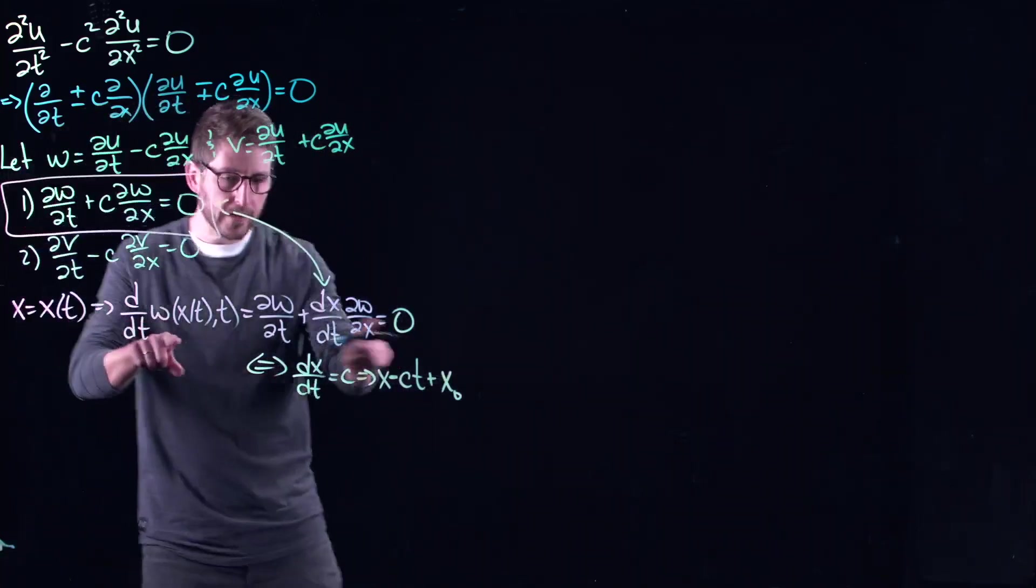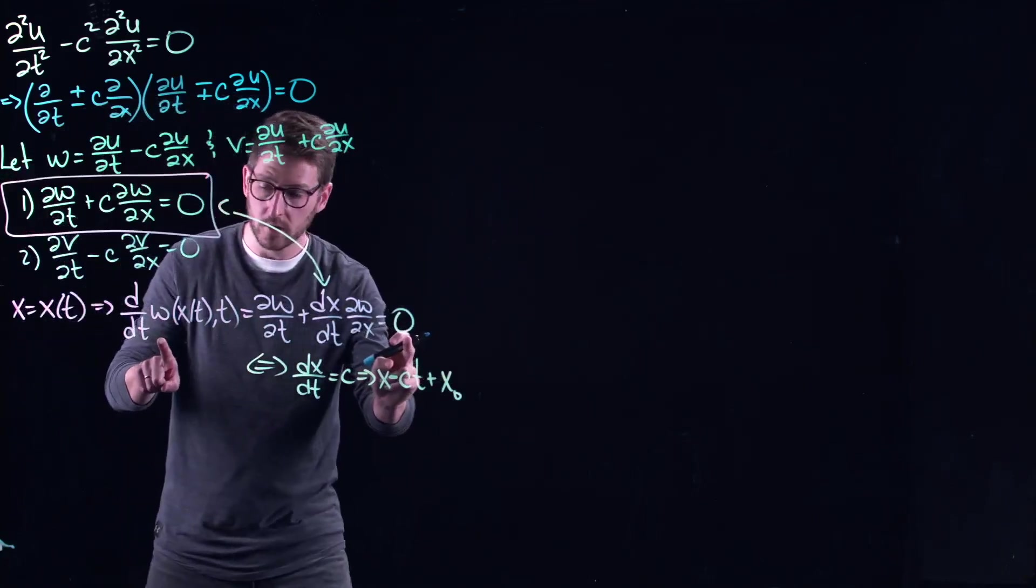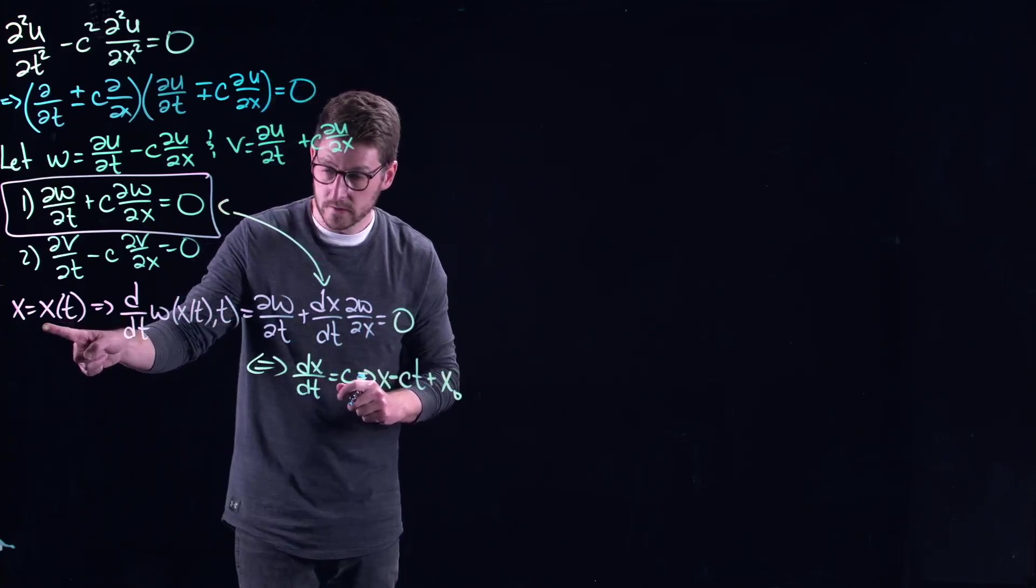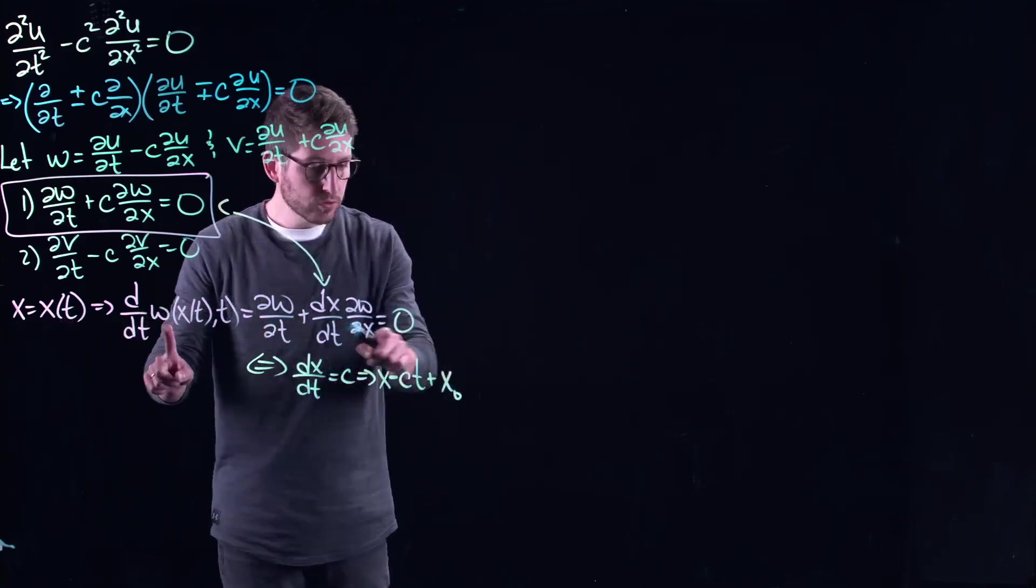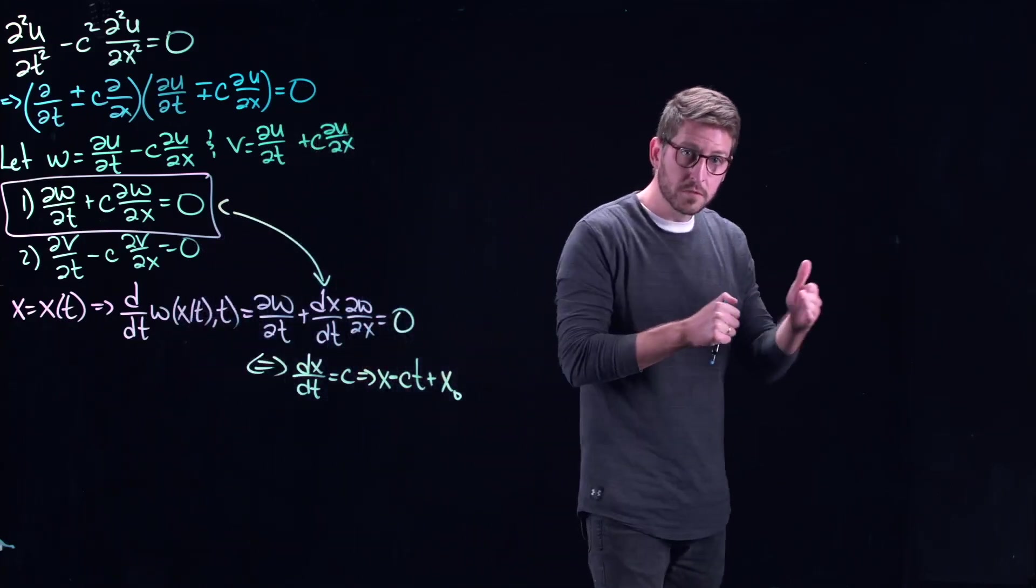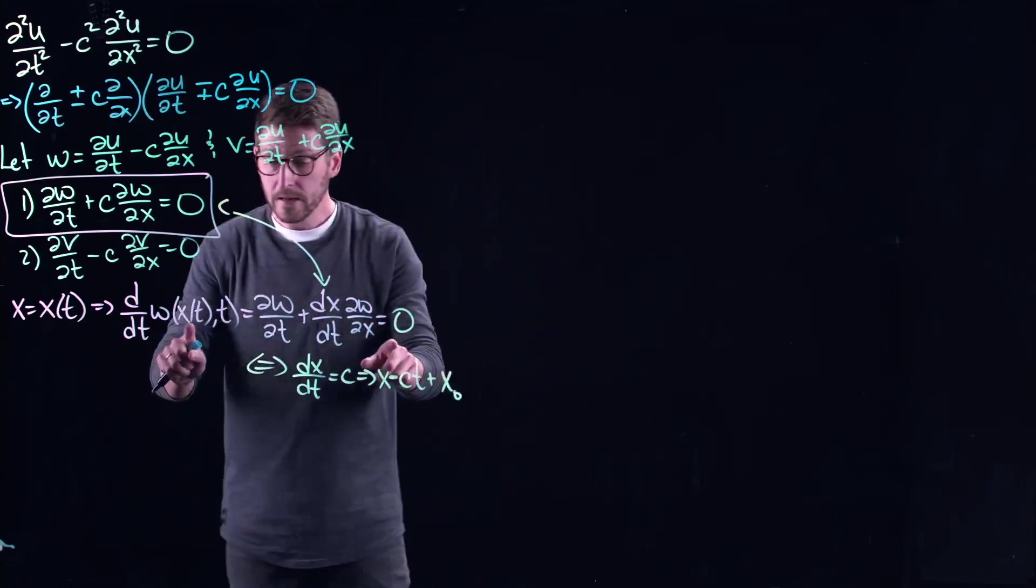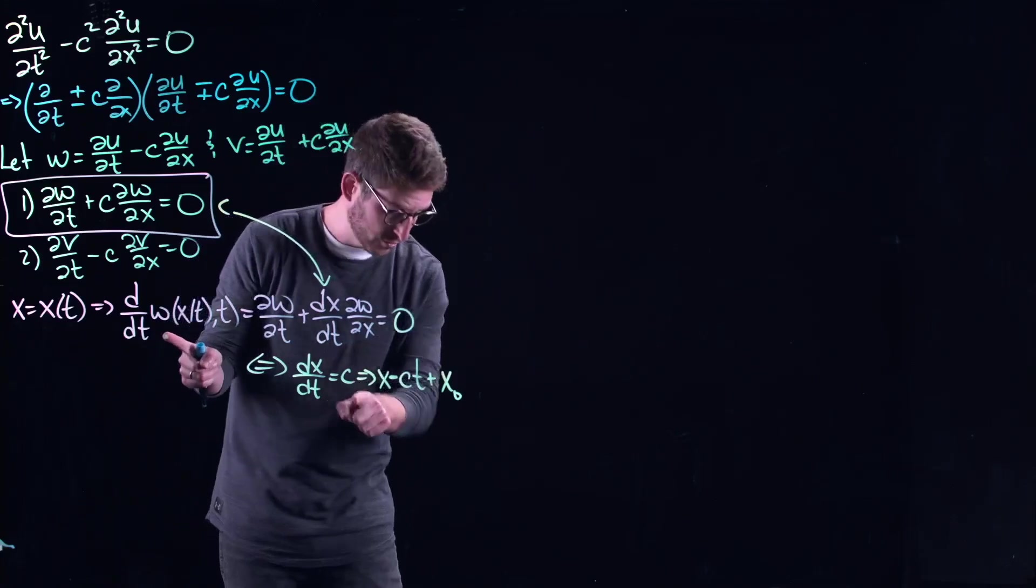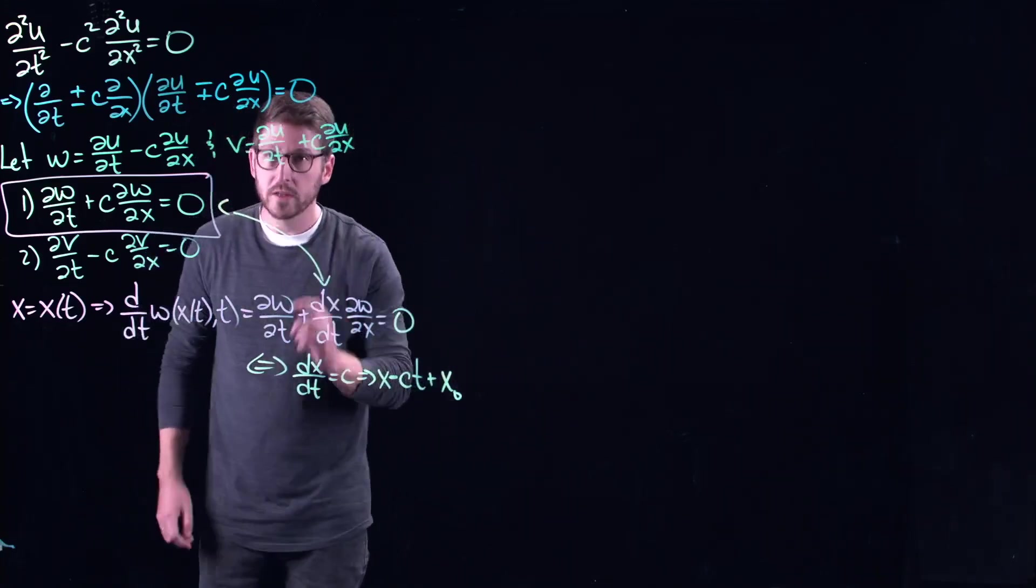And essentially what you're saying here, let's track this back for a second. This and this equal to zero tells me that if I track my solution in space according to time, according to this thing right here, the solution's not going to change. So imagine I'm walking through space at a prescribed time and watching the solution move through time. If I walk at exactly the speed c, I don't see any change in the solution.